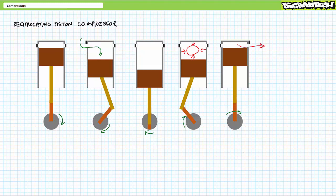What I've described is the operation of a single stage reciprocating piston style compressor. While single stage compressors do exist, it's often more efficient to perform compression using more than one stage.